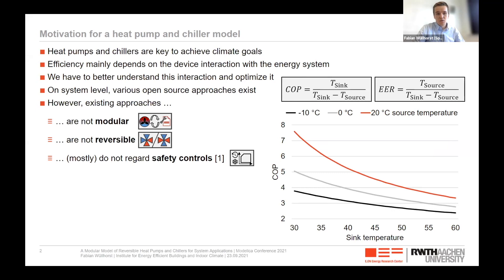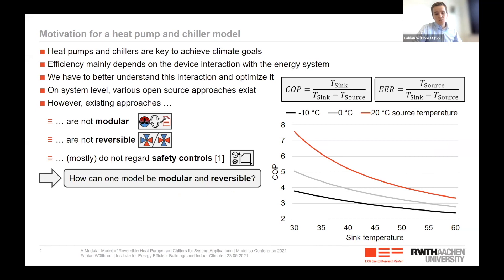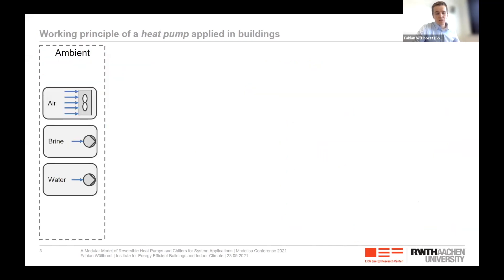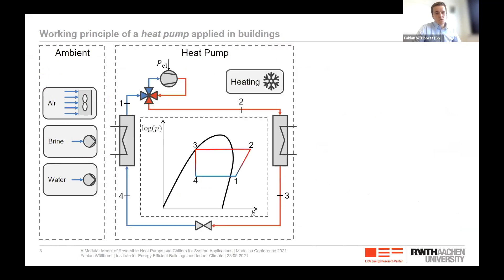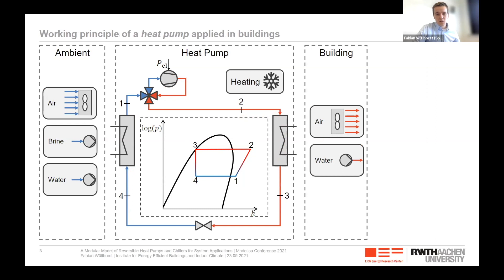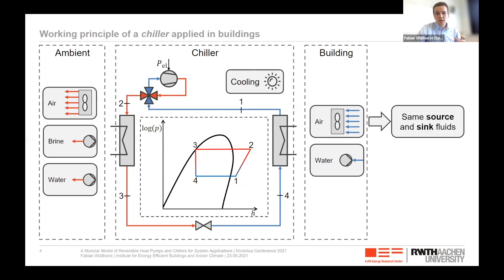I want to answer the question: how can one model for a heat pump and a chiller be modular and reversible? In a building, we use different source fluids — for example, air, brine, or water — to evaporate a refrigerant, then compress it, and then condense it to supply heat. A four-way reversing valve can switch operation from heat pump to chiller mode, extracting heat from the building and supplying it to the ambient in summer. Both modes use the same source and sink fluids, making a modular and reversible model possible.